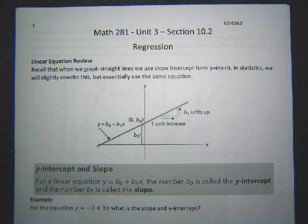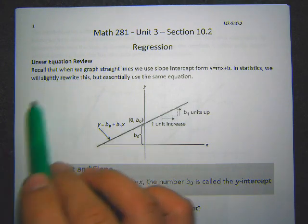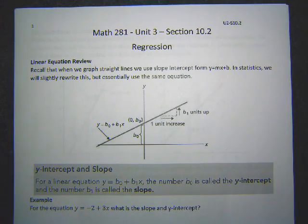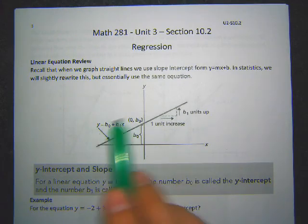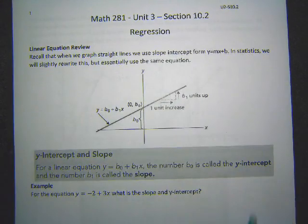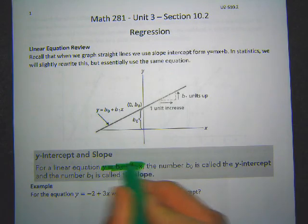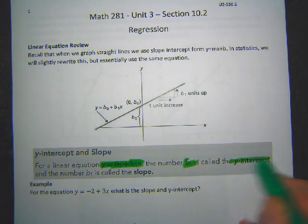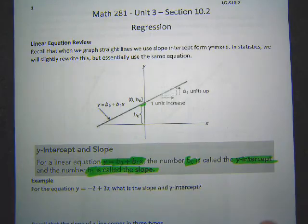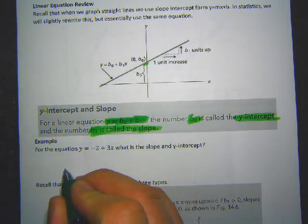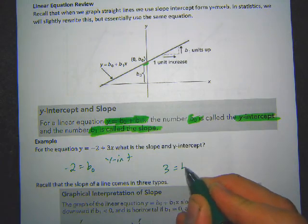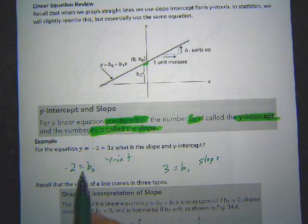Let's review some stuff about equations of lines. In algebra we use slope-intercept form y = mx + b. In statistics, we rewrite it as b₀ + b₁x, where b₀ is the y-intercept and b₁ is your slope. So for an equation like y = -2 + 3x, negative two is b₀ (the y-intercept) and three is b₁ (the slope).